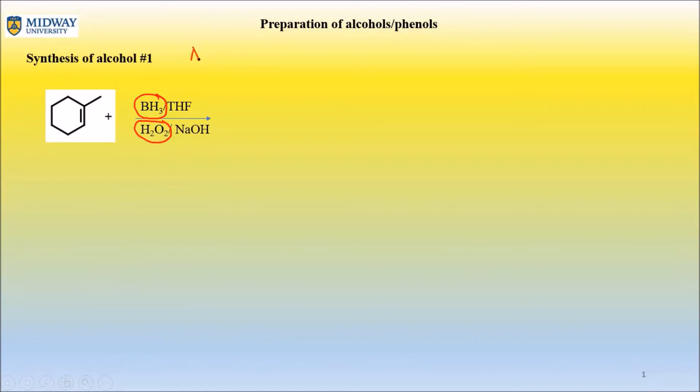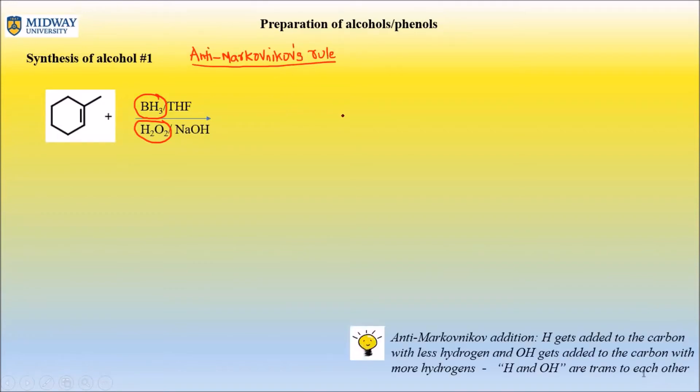If you are given BH3 and hydrogen peroxide, that's a direct indication it's anti-Markovnikov. I can't emphasize this anymore. Anti-Markovnikov rule. I have put this also in the hint as a tip, so let me actually go ahead and put that up here before I draw the product.